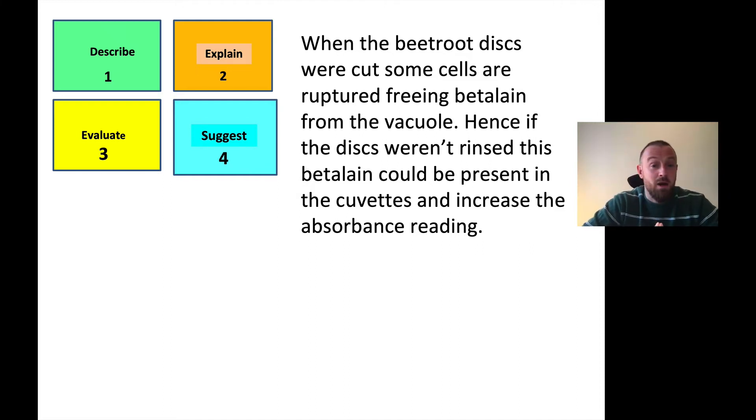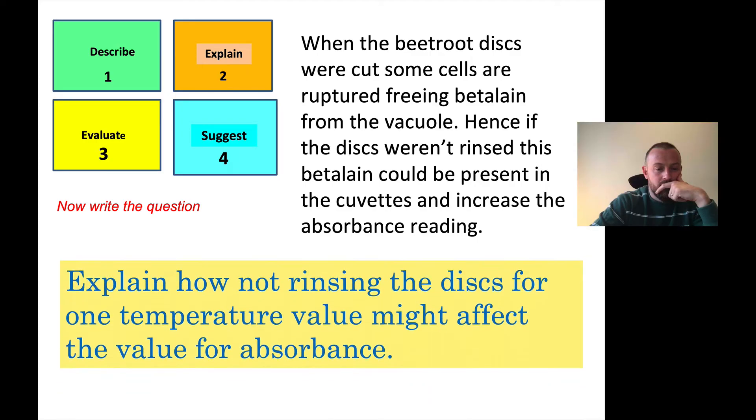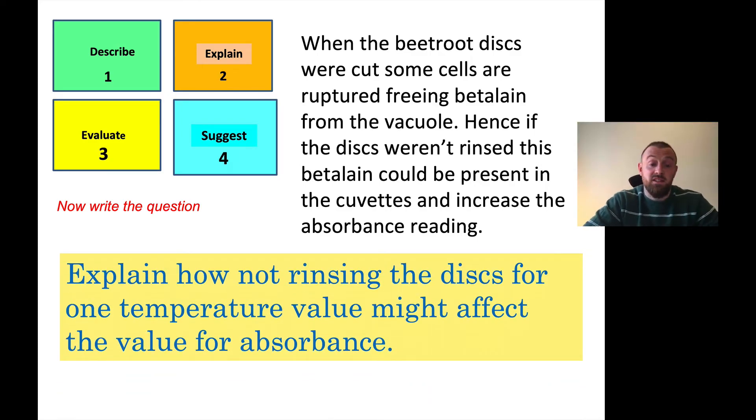This one is about an experiment that you might have done in year 12, potentially. So this one would be - I can see why you might say a suggest, but I think it's an explain because it would be explain how something affects. There's a clue for the question. Think about the question, pause the video. Here it is: explain how not rinsing the disks for one temperature value might affect the value for absorbance that you then measure in a colorimeter. This is all about one of the PAGs, one of the assessed practicals that we do, which is about the betalain leaking out of the vacuole of beetroot cells when you raise the temperature of the cells. Another one.